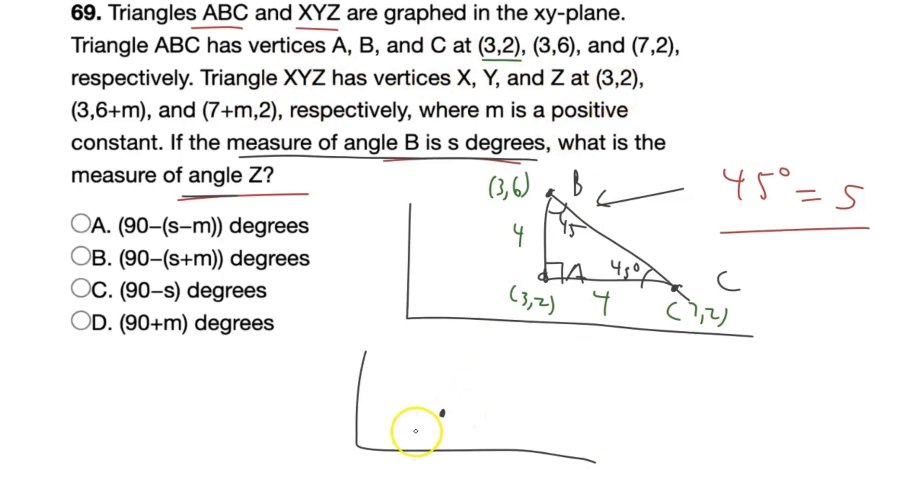So we have a right triangle because these lines AB and AC, they're perpendicular. And so we can call these both angles 45 degrees. And funnily enough, it says if the measure of angle B is s degrees, what is the measure of angle Z? Well, we just found the measure of angle B, 45 degrees. So 45 degrees must be equal to s. But that's only one variable because we have to find angle Z in terms of s or m, which I don't know if we can find. But let's do the same thing that we just did for XYZ.